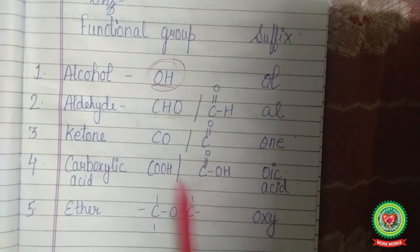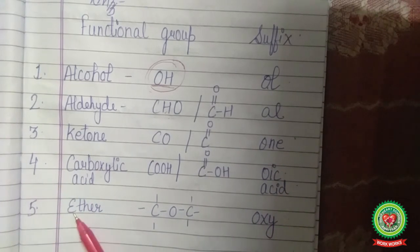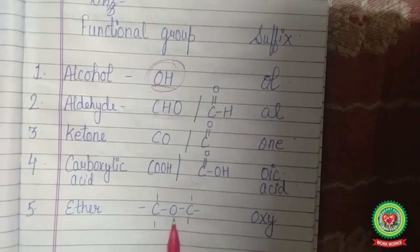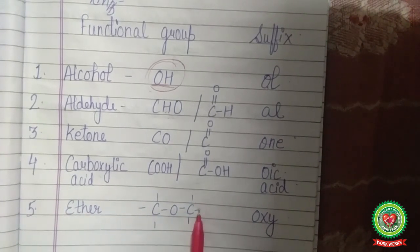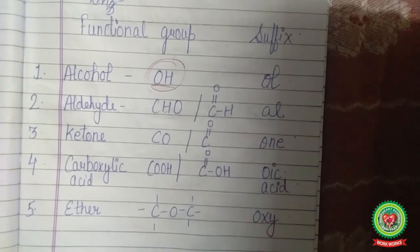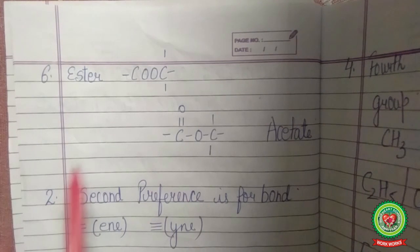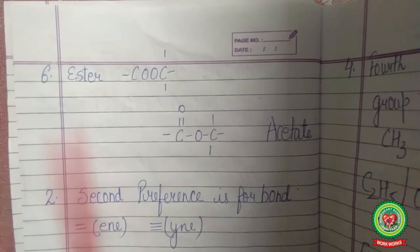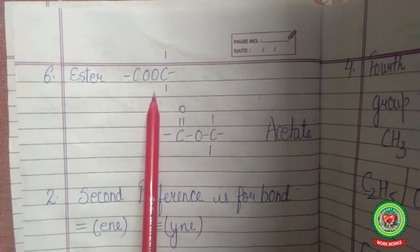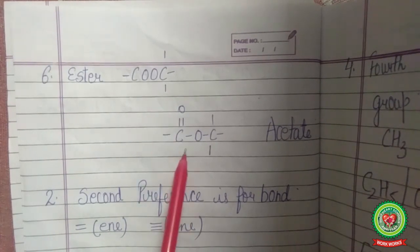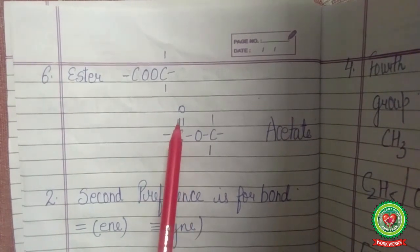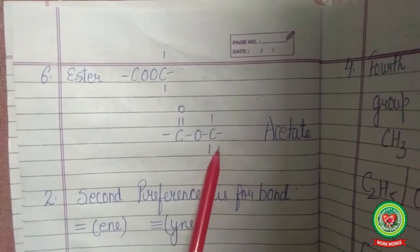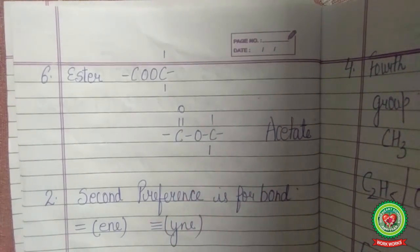Next is ether — recognized when an oxygen is present between two carbons, with suffix '-oxy'. The next functional group is ester — in ether there is one oxygen, but in ester there are two oxygens between two carbons. Its structural formula is C=O-O then another carbon, and the suffix used is '-oate'.